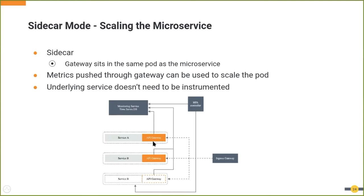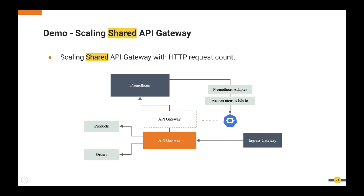This brings us to the demo section. I'll be handing over this session to Renuka to continue with the demo. Observability of micro gateway has been enabled, so HTTP request count is one of the metrics exposed by micro gateway. We are using Prometheus as the monitoring system and the Prometheus adapter is registered to the custom metrics API. We are going to configure HPA with an HTTP request count of 2 in this demo.